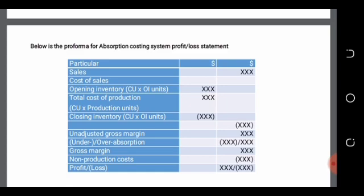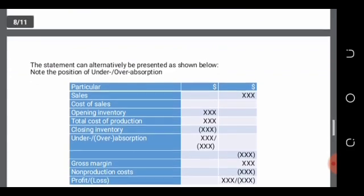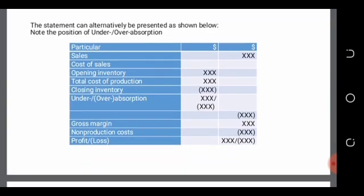After obtaining the real gross margin, we subtract all non-production costs — both variable and fixed — as period costs to get profit or loss. There is an alternative statement format for the absorption costing system where the only difference is the placement of under/overabsorption: it is placed just below cost of sales. Under absorption is added there; overabsorption is subtracted, giving an already-adjusted gross margin. The absorbed overheads occur in the total cost of production.